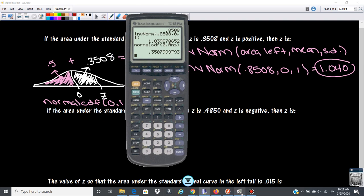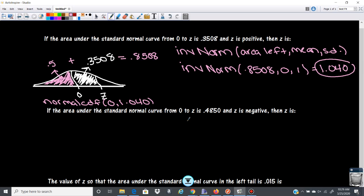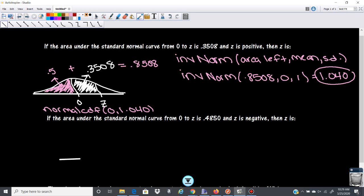So let's take a look at another problem. So the area under the standard normal curve from 0 to z is 0.4850, and z is negative. Okay, so let's draw this out so we can get a picture of it.